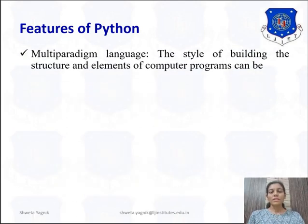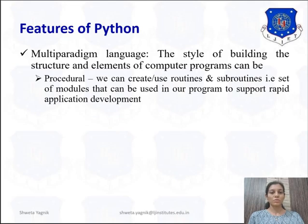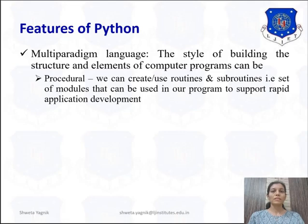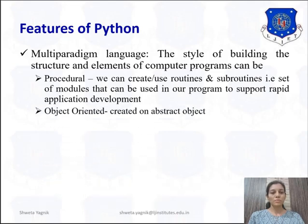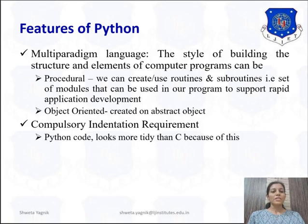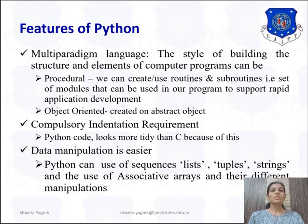Python is a multi-paradigm language. The style of structuring programs can be either procedural-oriented or object-oriented. One can develop a program in a procedural way, or choose to implement functionality using object-oriented methods — Python supports both. We can create routines and subroutines as modules to support rapid application development. Compulsory indentation is required; Python doesn't use curly brackets but uses indentation to form a block. Data manipulation is quite easy because Python uses lists, tuples, strings, and associative arrays.